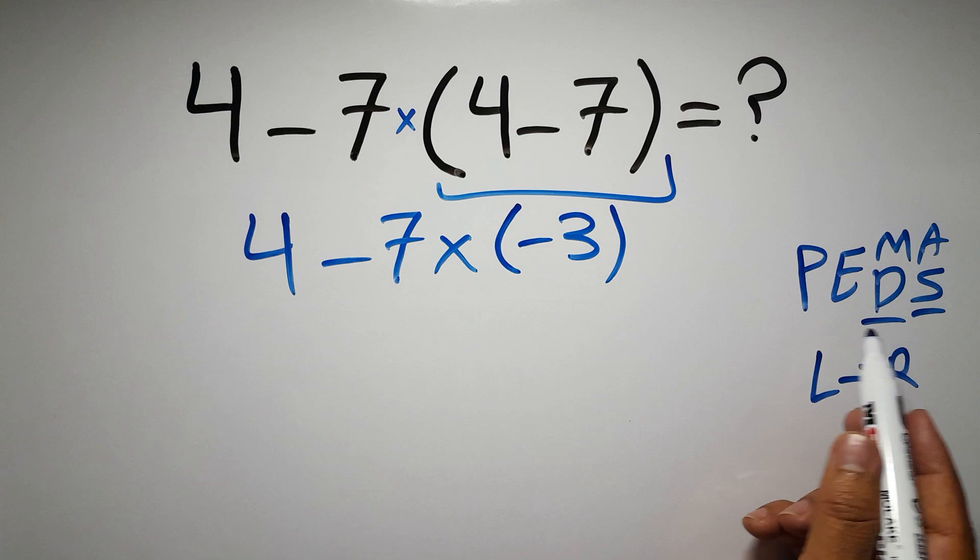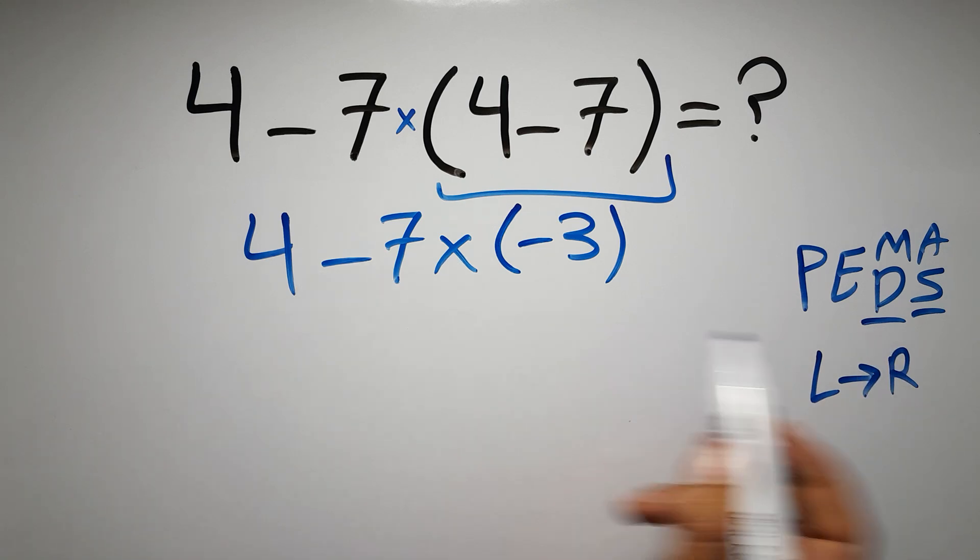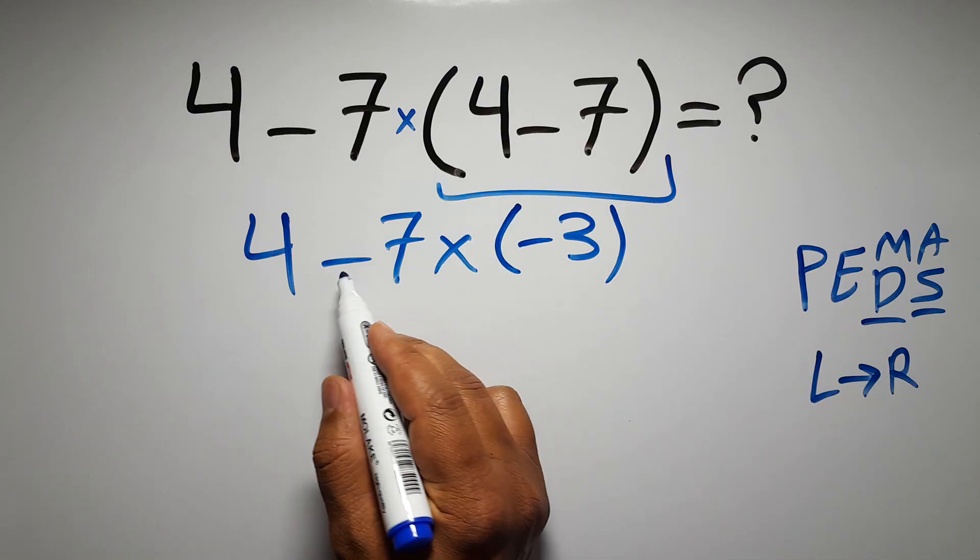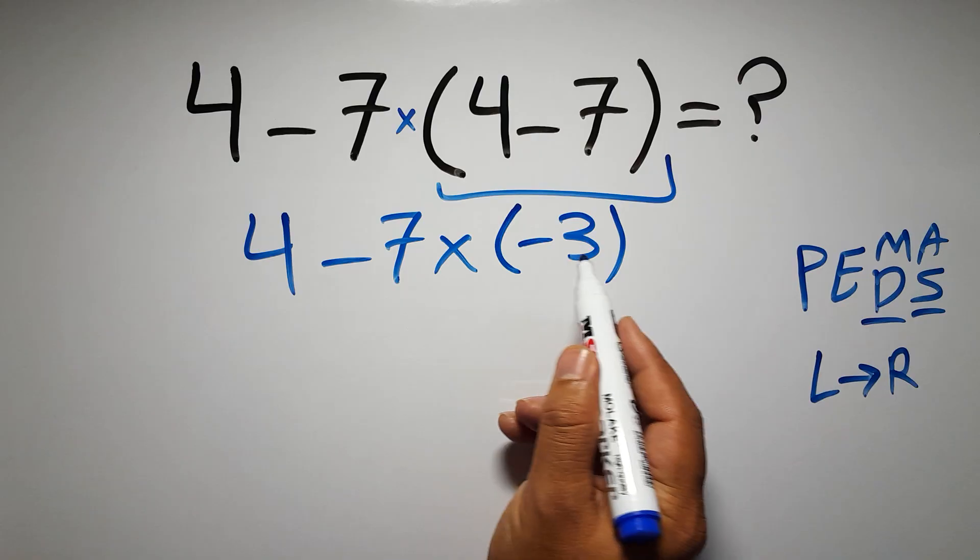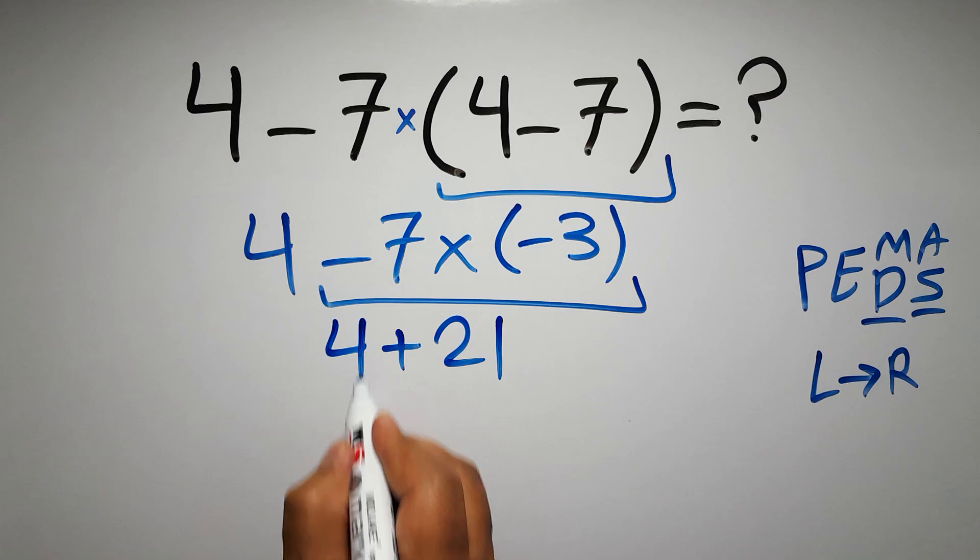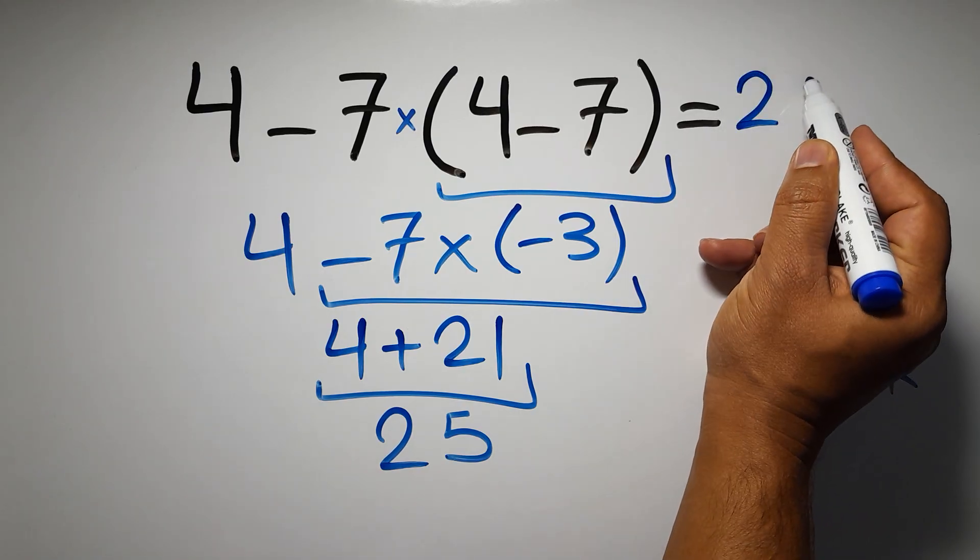According to PEMDAS, multiplication has higher priority than subtraction. Multiplication comes before subtraction, so first we have to do this multiplication. Negative seven times negative three gives us positive 21, so we have four plus 21, which equals 25. This is our final answer to this problem. The correct answer is 25.